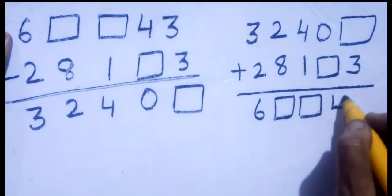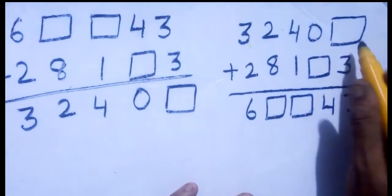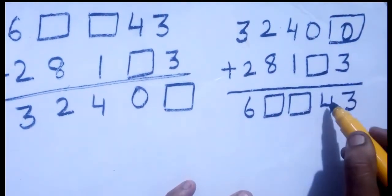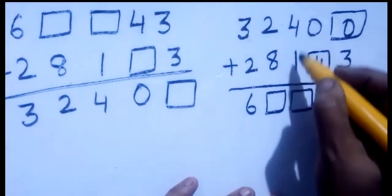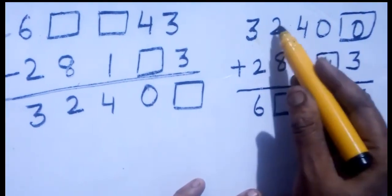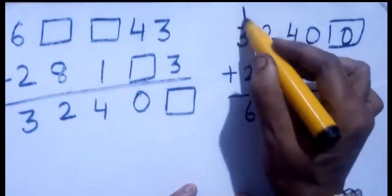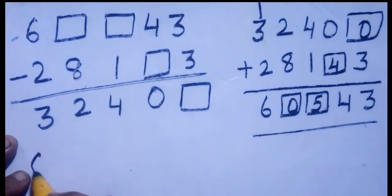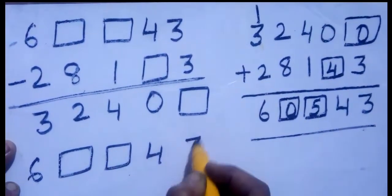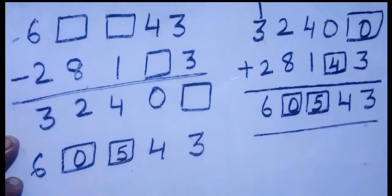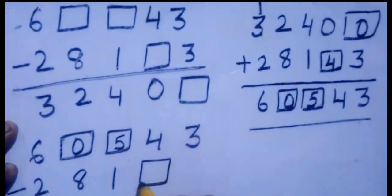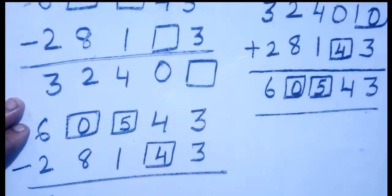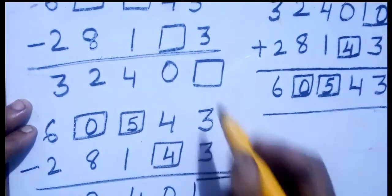When you add these two, you should get 6 [box] [box] 4 3. What do you add to 3 to get 3? That is 0. What to add to 0 to get 4? That is 4. 4 plus 1 is 5. 8 plus 2 is 10, write 0 carry 1. 3 plus 1 is 4, 4 plus 2 is 6. So the missing digits are 4, 2 4 0, and the full number is 6 2 4 4 3 with the box being 4.